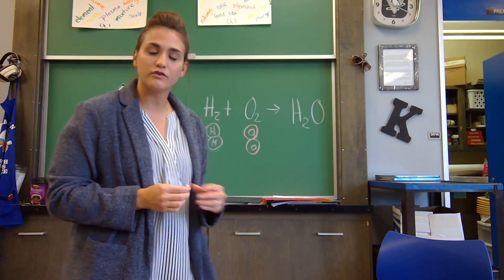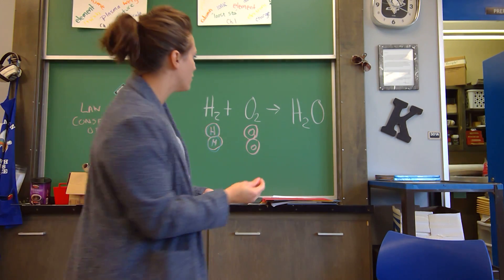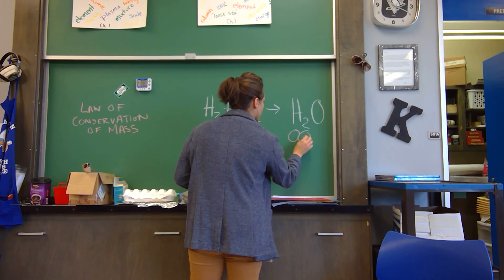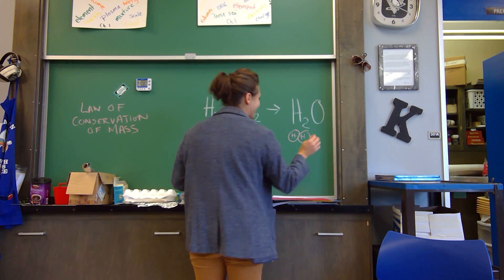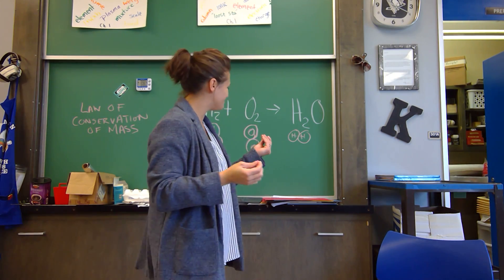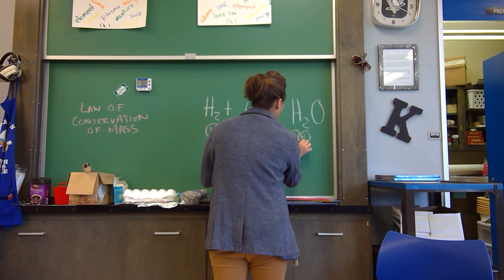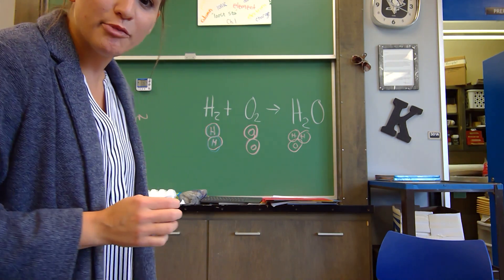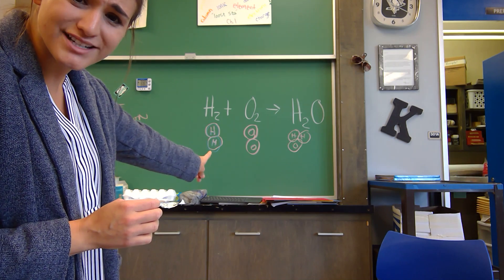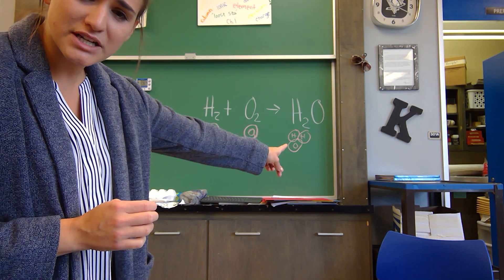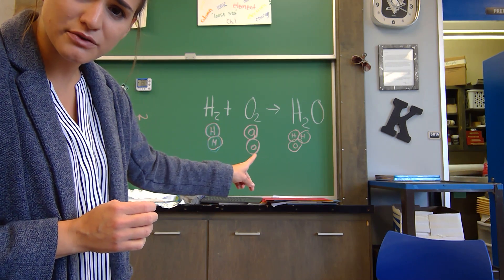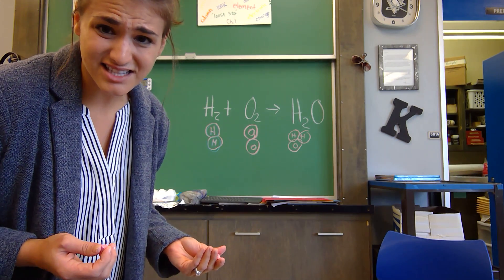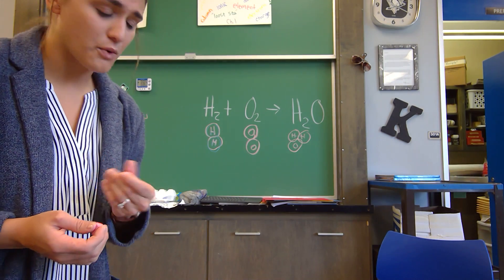Now when we move over here, we have H2O, which would have two H's and one O — kind of looks like Mickey Mouse. So there were two H's over here and there are two H's over there — that's fine. But there were two O's over here and there's only one O over there. That doesn't make any sense, so we have to be able to balance this equation.